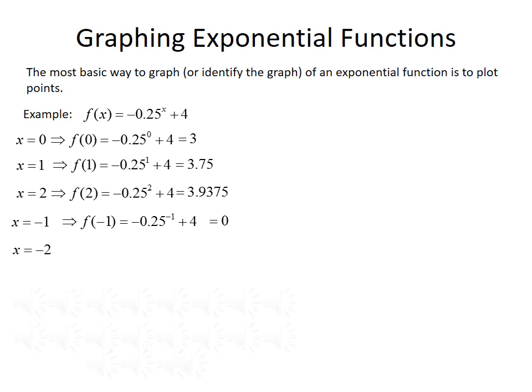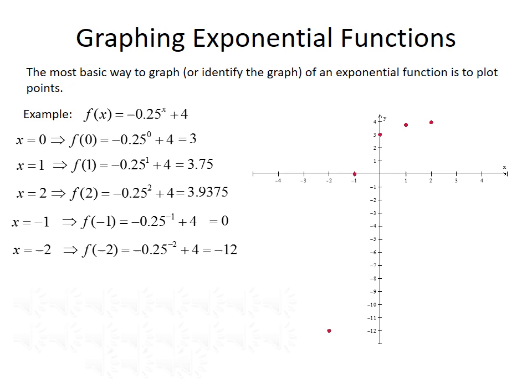Finally, if x equals negative 2, f of negative 2 equals negative 0.25 to the negative 2 power plus 4, which evaluates to negative 12. So we've picked five x values and found their corresponding y values. If we plot those points and connect the dots, the graph of f of x equals negative 0.25 to the x power plus 4 looks something like this.